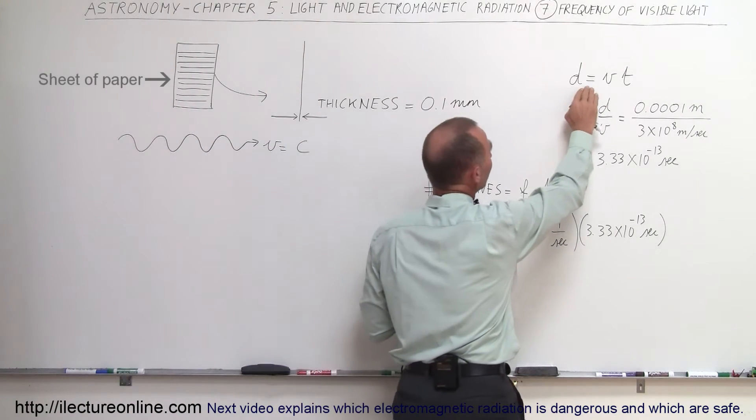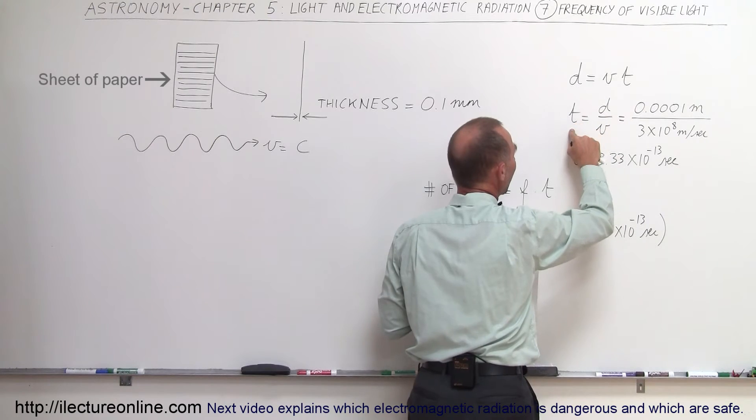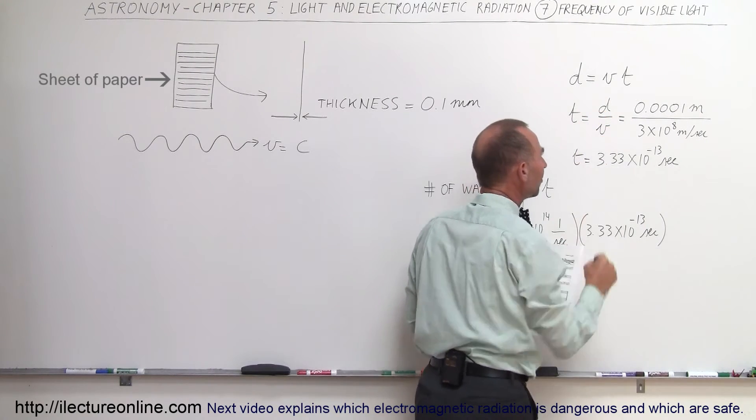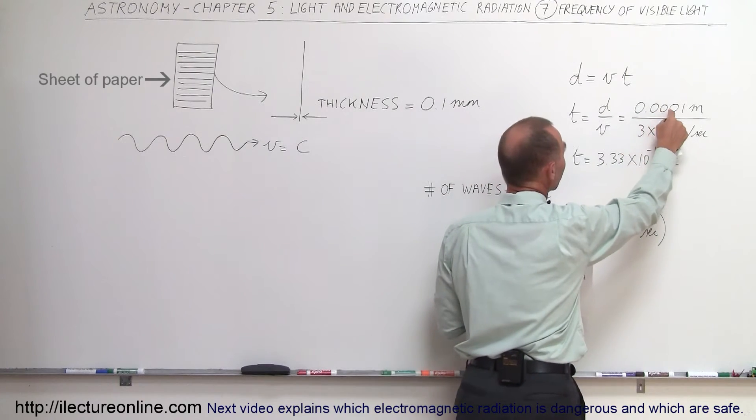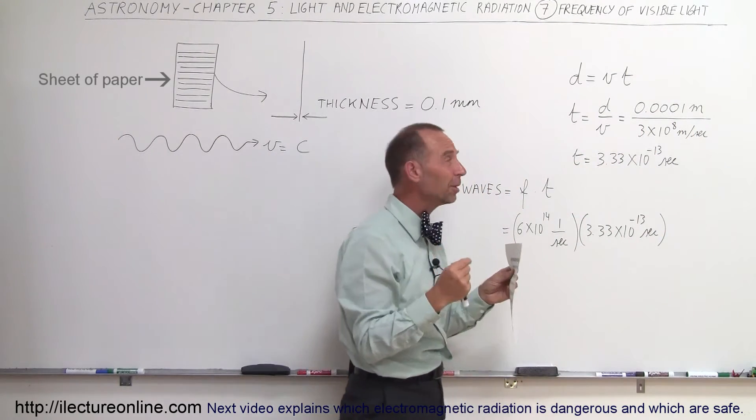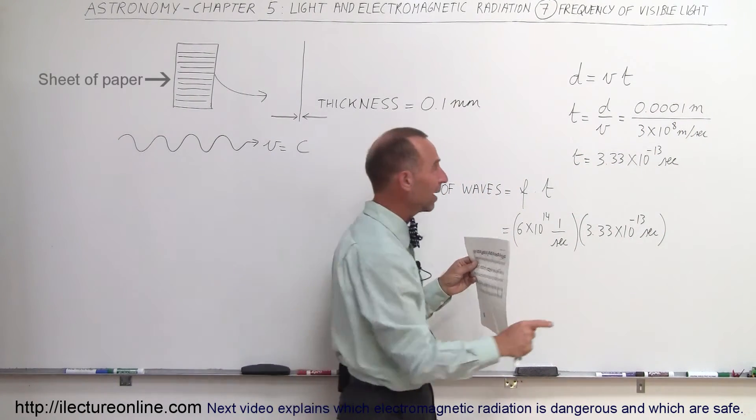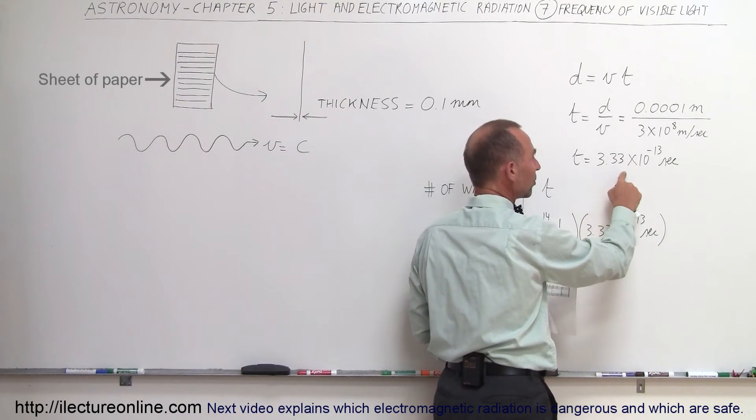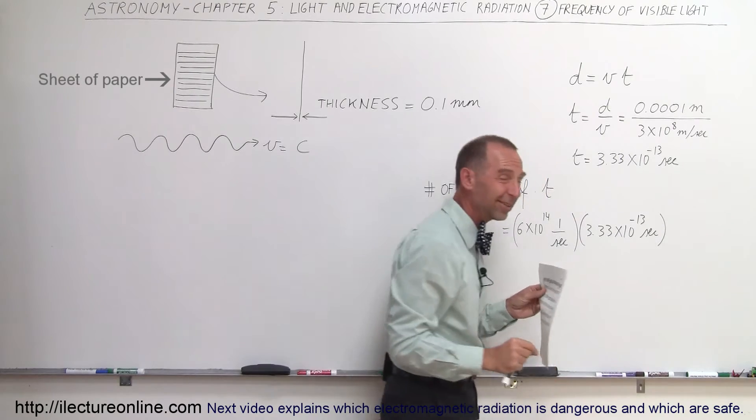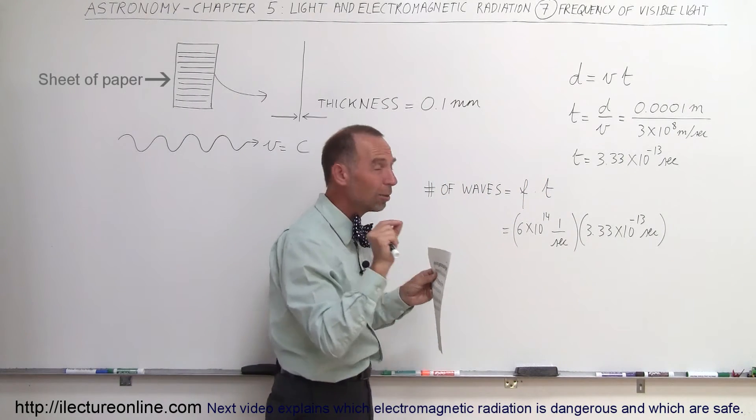We have the equation distance equals velocity times time, which means time equals distance divided by velocity. So we take the thickness of the piece of paper, which is 0.0001 meters (a tenth of a millimeter), and we divide that by the speed of light, 3×10⁸ meters per second, which gives us 3.33×10⁻¹³ seconds. That's a really small amount of time.